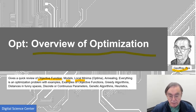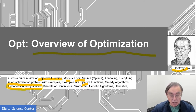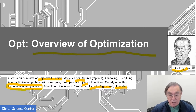I will give examples of objective functions and greedy algorithms. We'll talk about distances which underlie a lot of optimization problems — you're trying to make distances for these things small. We'll look at different types of parameters, discrete and continuous, genetic algorithms aimed at maybe discrete problems, and heuristics, which sort of everything is. All right, let's get going.